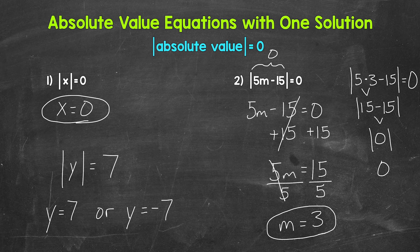There are a couple of examples of absolute value equations with one solution. Just remember, if you have an equation where the absolute value is equal to 0, you'll have one solution. This is the case whether the absolute value equation is already isolated and equal to 0, or if you need to isolate the absolute value first and then it ends up being equal to 0 — you'll have one solution for that as well.